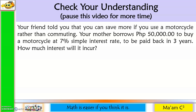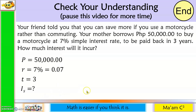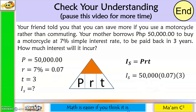Now it is time to check your understanding. Your mother borrows P50,000 at a 7% simple interest rate, to be paid back in 3 years. How much interest? P equals 50,000, R equals 0.07, T equals 3. Using I equals PRT and substituting the values, the interest is P10,500.